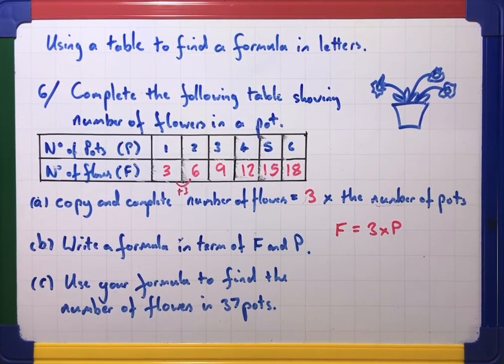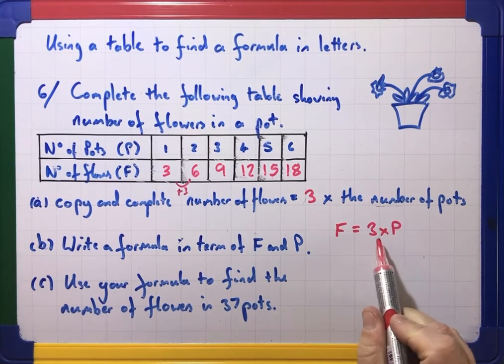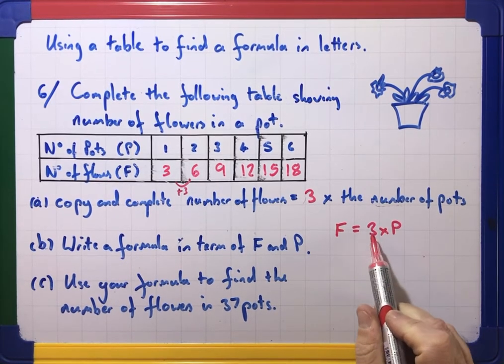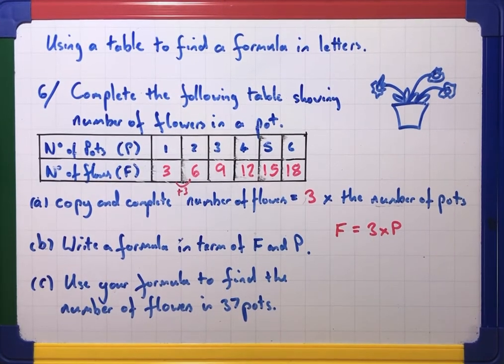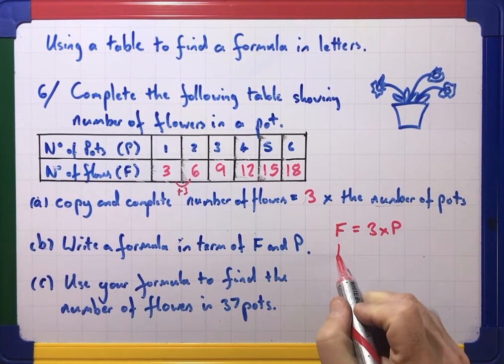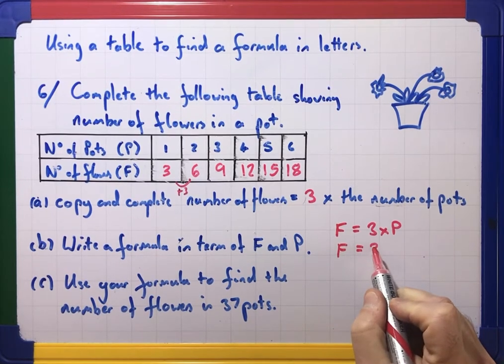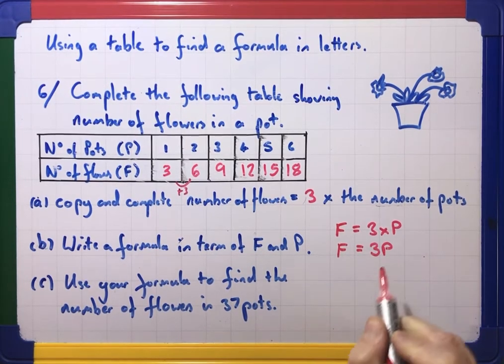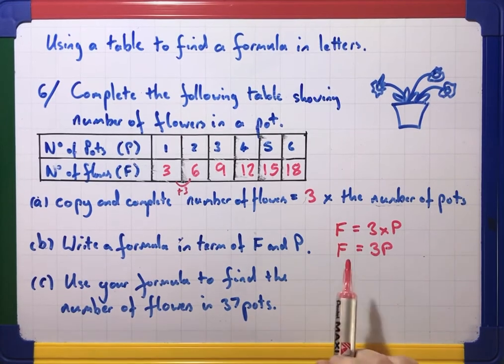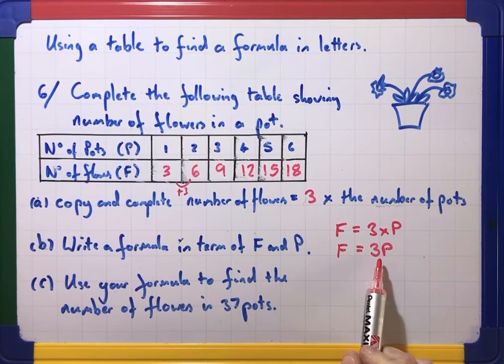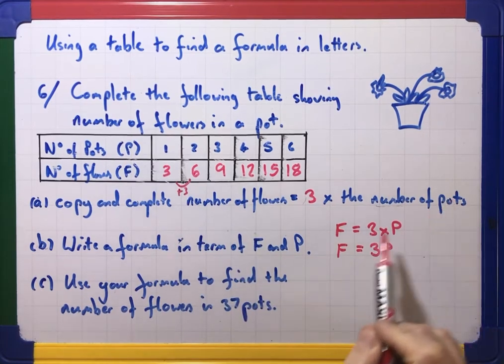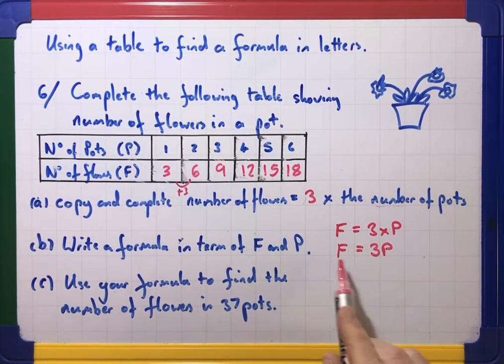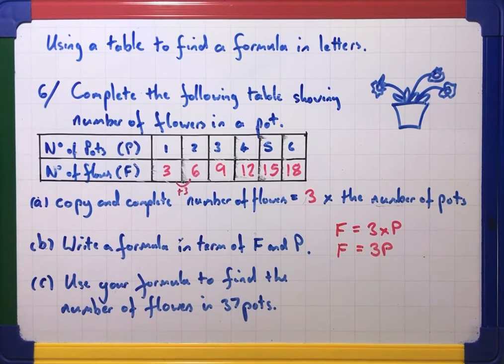But we make that even shorter in maths because if we've got numbers and letters we don't need a times between them. So what I would write for meaning three times P is I would just write F equals 3P. And that is as short as I can make it. It's a lot shorter than that one and it's a bit shorter than that one. And we need to know that if I write three next to a P it means three times P.